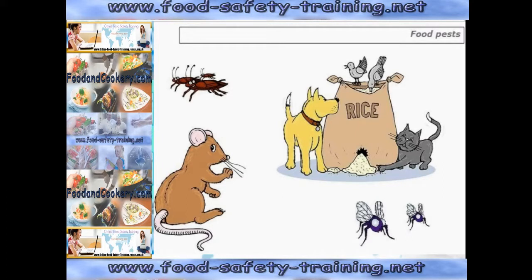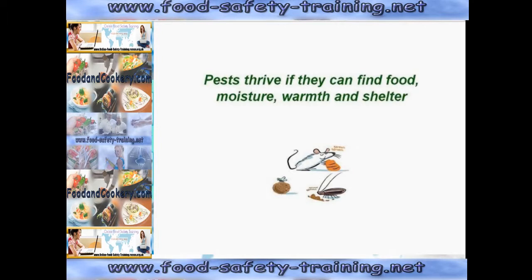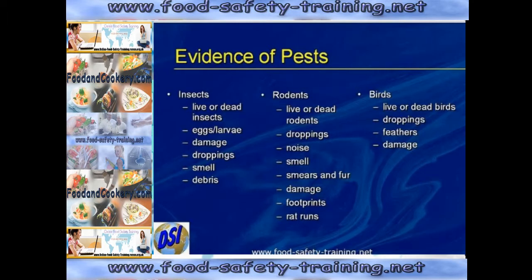Food pests are noxious creatures which should not be present on food premises. Examples include insects, rodents, flies, domestic dogs and cats, and birds. Pests are like us — they thrive if they can find food, moisture, warmth and shelter. Even if a food business has a pest control contractor, it is still a legal requirement for the manager to check for evidence of pests on a regular basis, preferably about once a week.